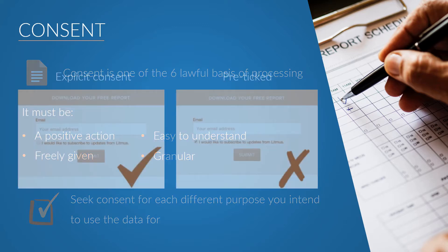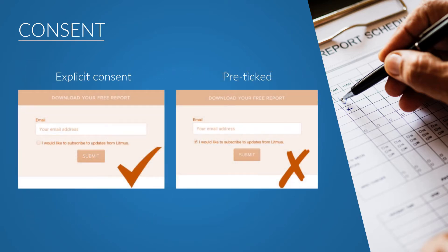Let's discuss consent boxes. On online forms, pre-ticked consent boxes are prohibited, as highlighted by this image from litmus.com. The box on the right is pre-ticked. Consent cannot be considered a positive action if there are pre-ticked checkboxes on the form. Websites with pre-ticked checkboxes, or combined privacy policies and terms and conditions, need to be updated urgently.